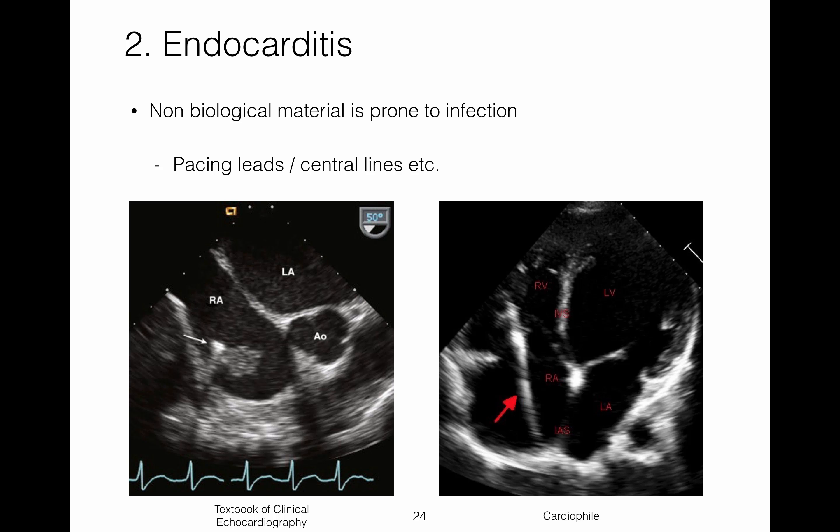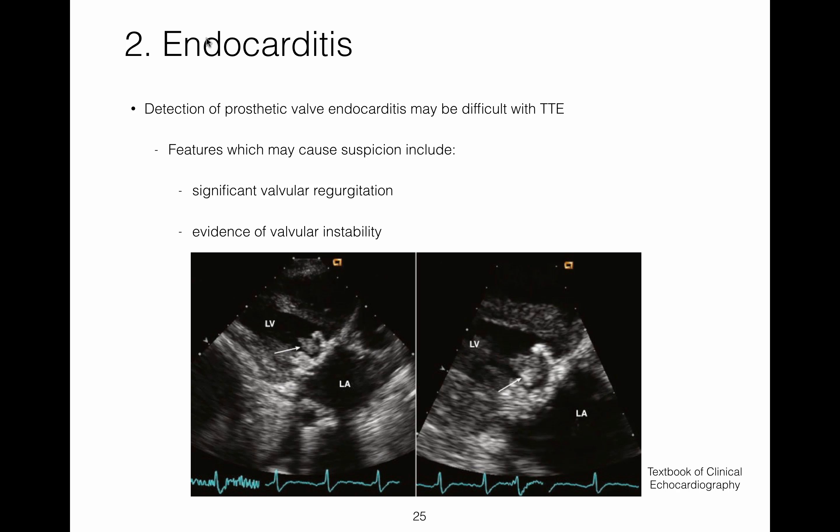Non-biological material is prone to infection — pacing leads and central lines are two such examples. Care should be taken to correctly identify pacing leads and central lines and not mistake them for a mass. Detection of prosthetic valve endocarditis — that is, endocarditis that occurs on a prosthetic valve — can be difficult with transthoracic echo. Two features which may lead you to be suspicious of prosthetic valve involvement include significant valvular regurgitation or evidence of valvular instability.